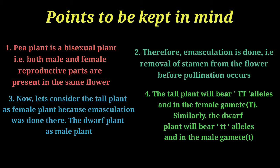Therefore, point two: Mendel performed emasculation. Emasculation is the process of removal of the stamen, which is the male reproductive part, from the bisexual flower before pollination takes place. Point three: the tall plant is considered the female plant because its flowers were emasculated — all the male parts were removed.